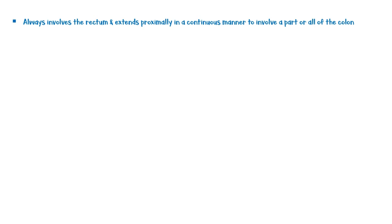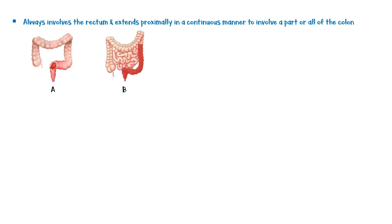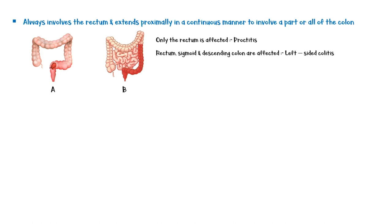Ulcerative colitis always involves the rectum and extends proximally in a continuous manner to involve a part or all of the colon. Diagram A shows ulcerative colitis involving only the rectum. Diagram B shows ulcerative colitis involving both the rectum and the colon. If only the rectum is affected, it is known as proctitis. If the rectum, sigmoid, and descending colon are affected, it is known as left-sided colitis. If the entire colon is affected, it is known as pancolitis or extensive colitis.